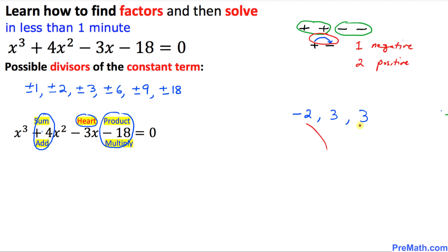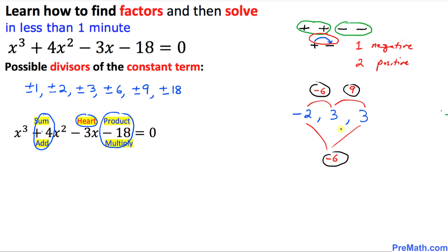Multiplying the end numbers: negative 2 times 3 times 3 is negative 6. Then multiplying the middle pairs: that's negative 6, and 3 times 3 is 9. Adding all three: negative 6 plus 9 plus negative 6 equals negative 3. We call it 'heart' because this calculation looks like a heart shape.